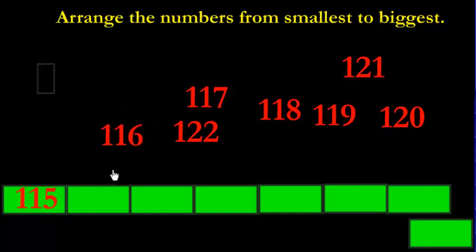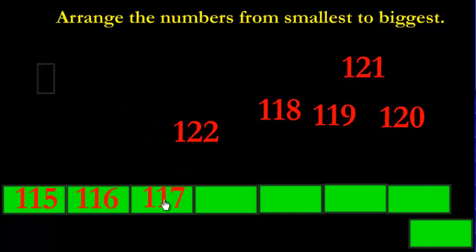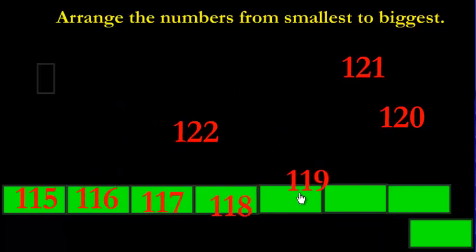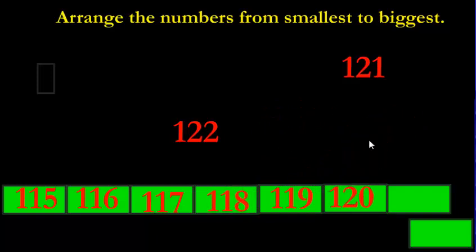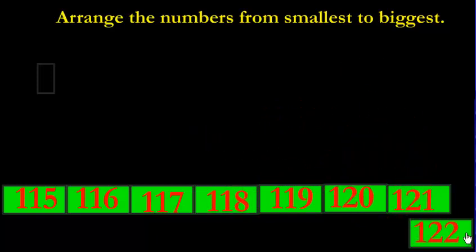That's the smallest because 22 and 17 and 16 are all bigger than 15. So we're going to put 115 in the first spot. Then in order: 116, 117, 118, 119, 120, 121, and 122 is going to be the biggest one because 22 is bigger than all these other numbers. And now what we've done is put them all in order.